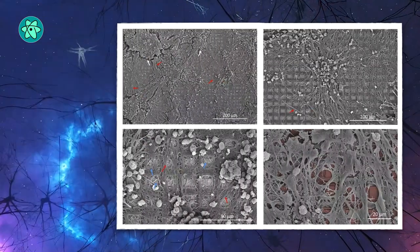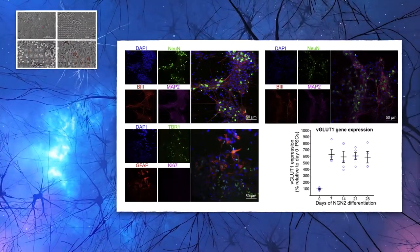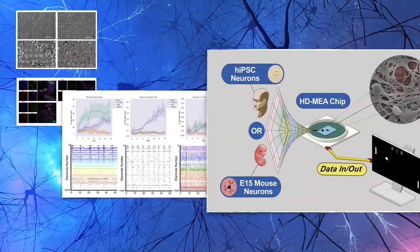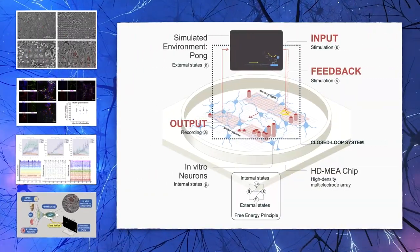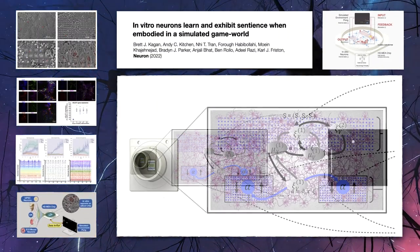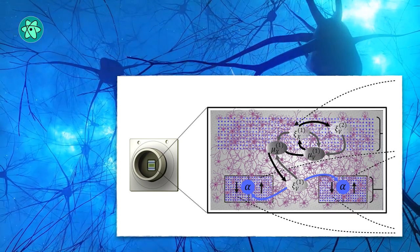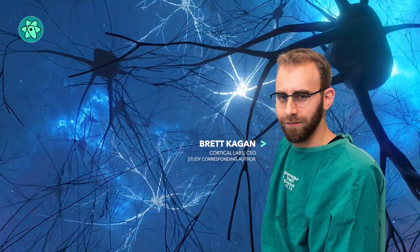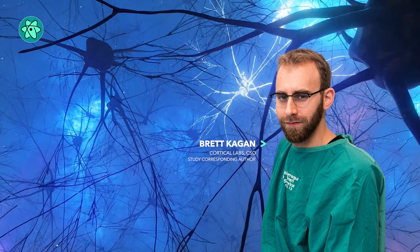The Melbourne-led team's DishBrain study results were published in the journal Neuron. The research has shown that we can interact with living biological neurons, compelling them to modify their activity and leading to something that resembles intelligence, says lead author Dr. Brett Kagan, chief scientific officer of biotech startup Cortical Labs.